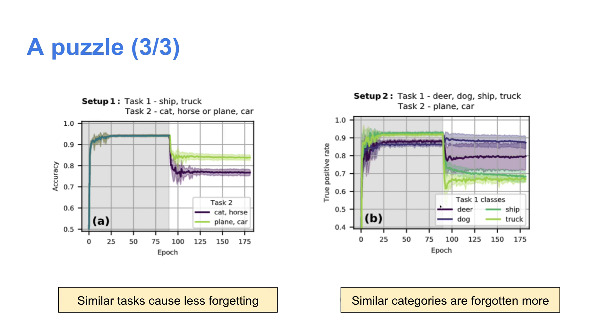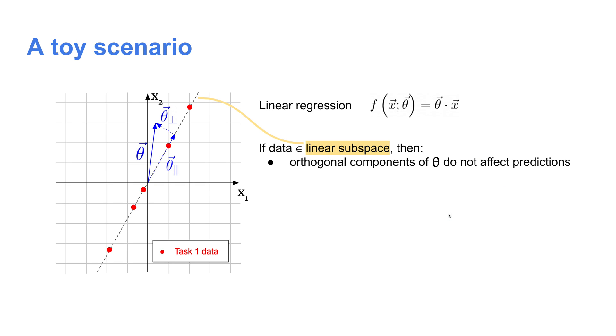The first thing we can do is try and get some intuition for what's going on by looking at a toy scenario, namely linear regression. Let's say we have some task one data which lies in a linear subspace, like the line in this 2D example on the left. There are two key things to note. First, the only part of the weight vector theta which affects the model's prediction on the data is the component of theta which lies in the data subspace.